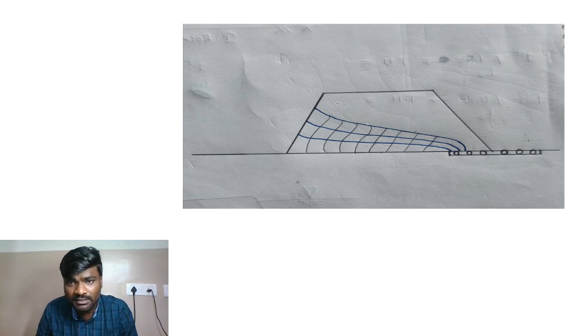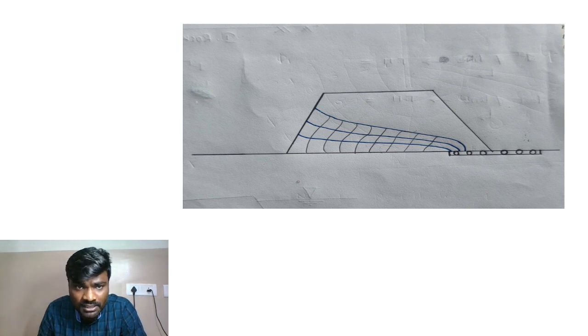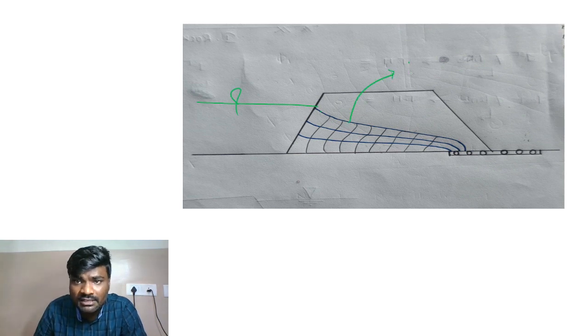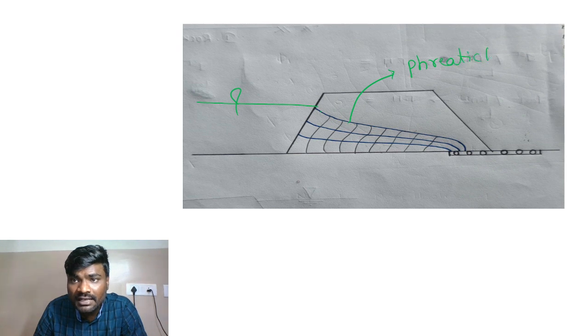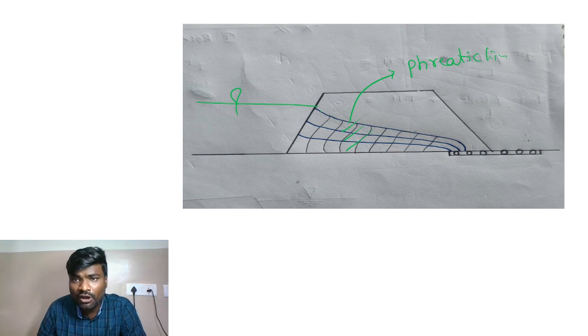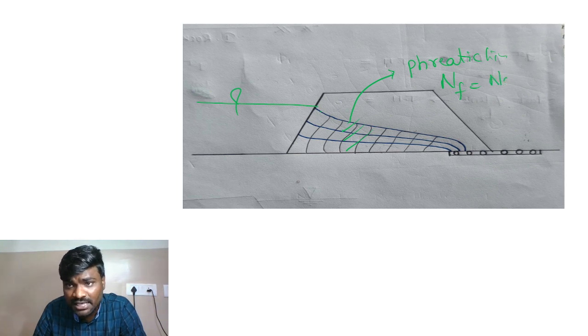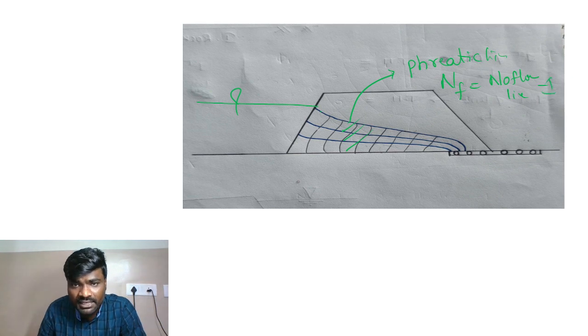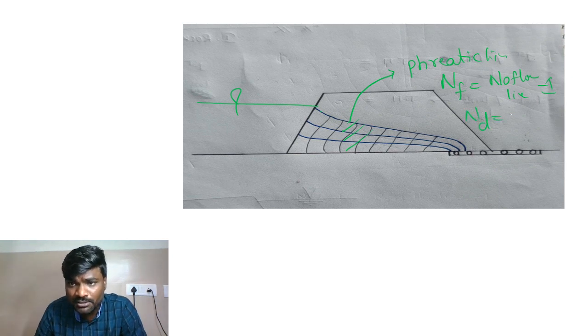Observe the overall flow: this is a flow line, the upstream surface, and this topmost is the phreatic line. The horizontal lines are flow lines, so the number of flow channels equals the number of flow lines minus one. The vertical lines are equipotential lines, so the number of drops equals the number of equipotential lines minus one.